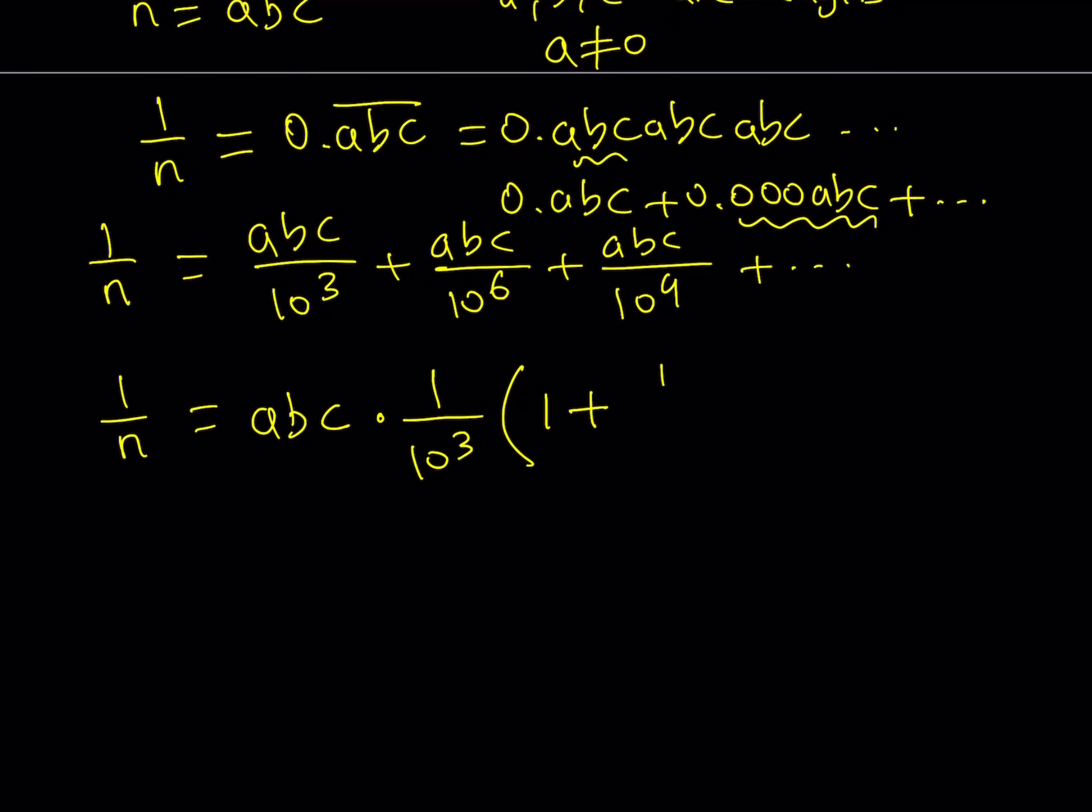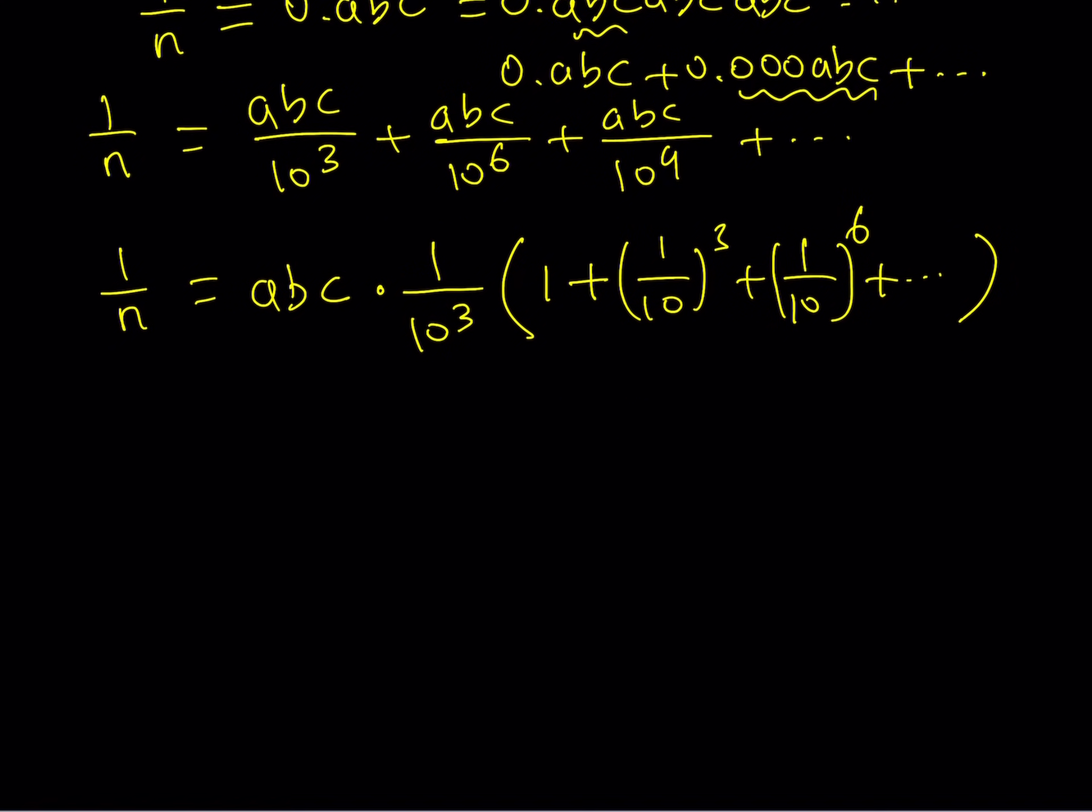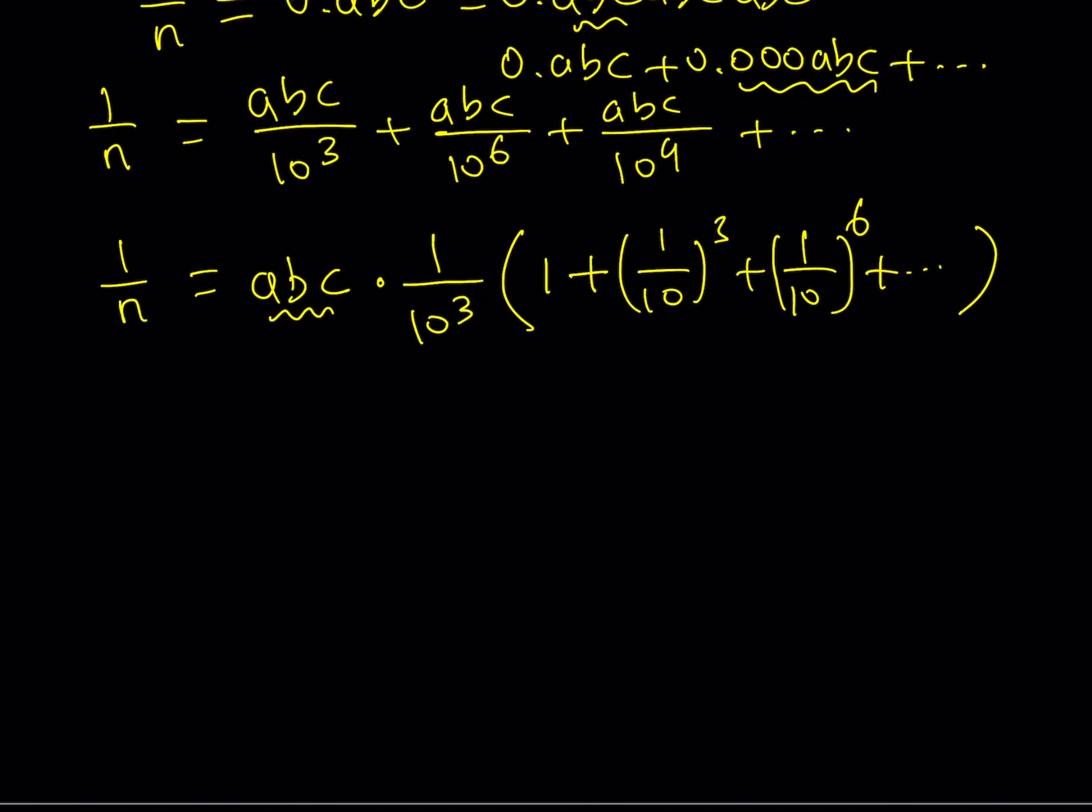And as you know, this should be fairly easy to solve because we're basically going to be dealing with a geometric series where r, the common ratio is one over 10 to the third power. So let's go ahead and notice that abc is our three digit number, which is also known as n. So I can replace it with n. And this is going to be one over 10 to the third power.